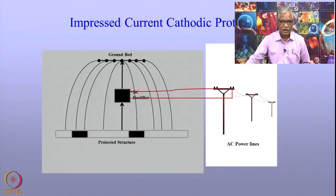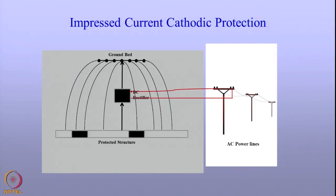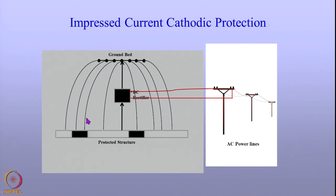There are two ways to bring down the potential. The first method is called the impressed current cathodic protection system. In this system, anodes are buried in the soil or electrolyte, and current is applied to the structures through these anodes using a DC rectifier. The positive terminal of the DC rectifier is connected to the anode and the negative terminal is connected to the pipeline. Current enters the soil through the anode and from the soil enters the pipeline, bringing down the potential of the pipeline to the required values. This is called the impressed current cathodic protection system, and it requires AC power lines.